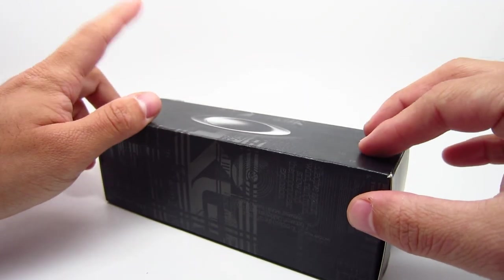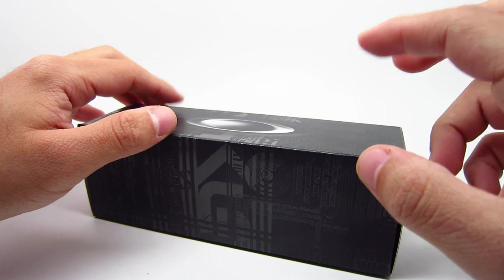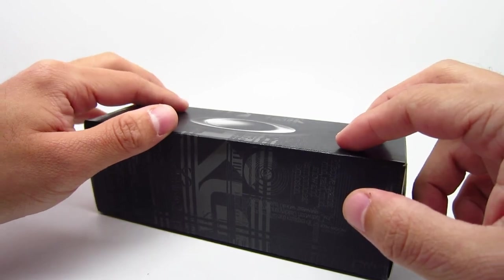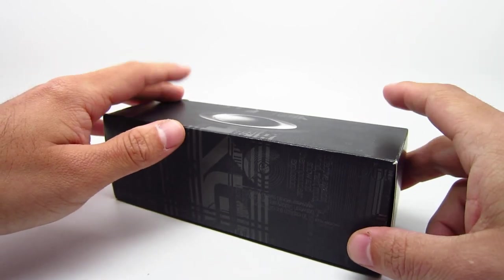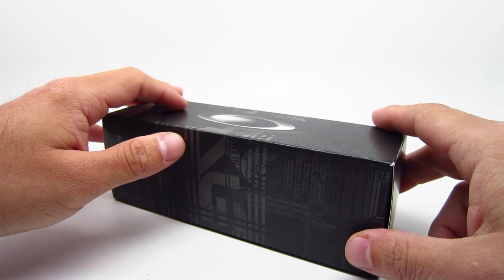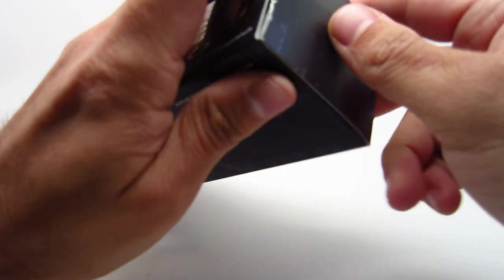I have three different colors to show you. The model number for this is the OX8153. All right, so the first color I have is the O4 color, which is the matte denim. So let's take a look inside.